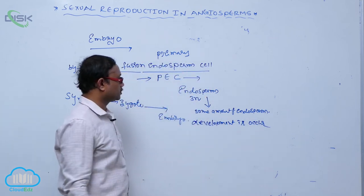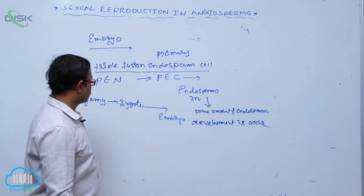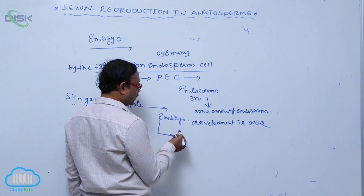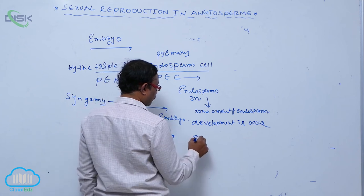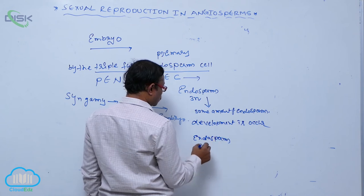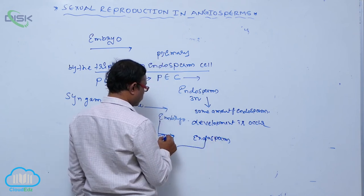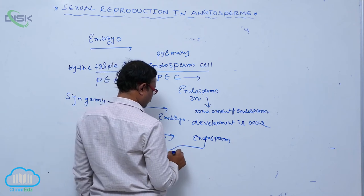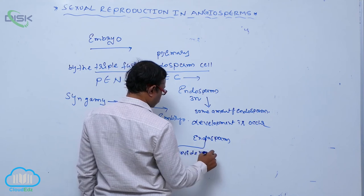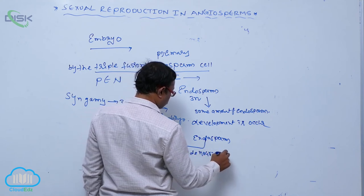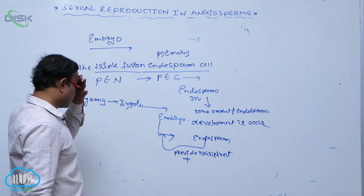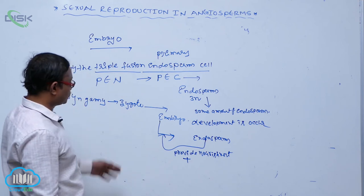After formation of some endosperm, for the development of that embryo, food material is necessary. This endosperm provides food material to the developing embryo. That is known as providing nourishment — that is the function of the endosperm.